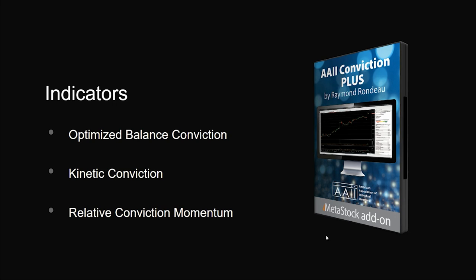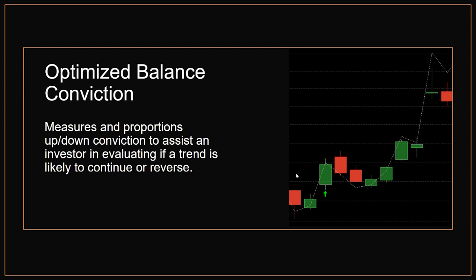To start, I'd like to highlight three of the indicators included in the AAII Conviction Plus: the Optimized Balance Conviction, the Kinetic Conviction, and the Relative Conviction Momentum. These are three very unique indicators included as part of the Conviction Plus add-on. The first one is the Optimized Balance Conviction, which is designed to measure the proportion of up or down conviction and assist you in evaluating if a trend is likely to continue or reverse. It's also very helpful in understanding the size of a potential move, and I find it's very helpful for looking for divergences between OBC and the price of the actual security.